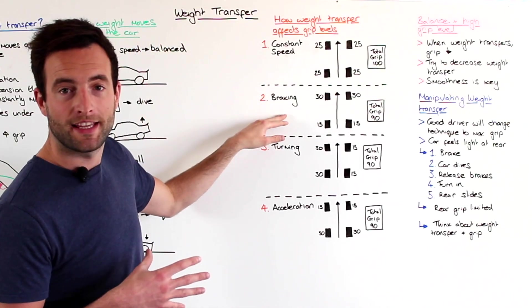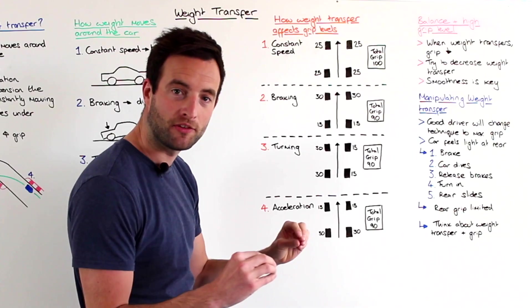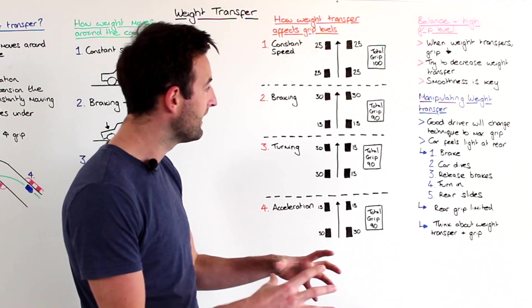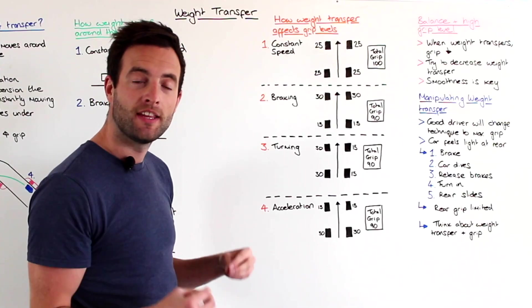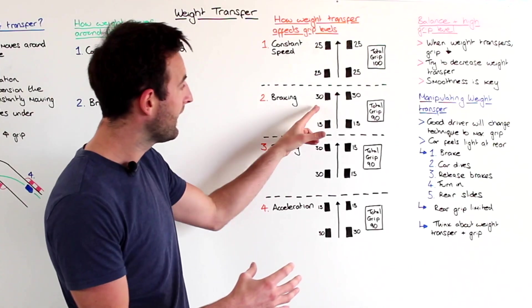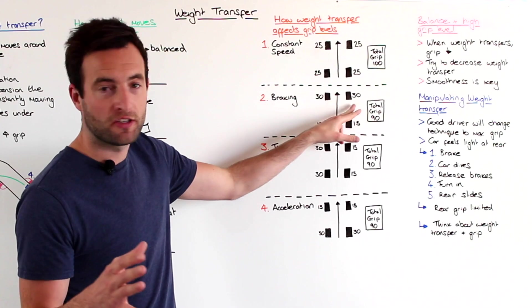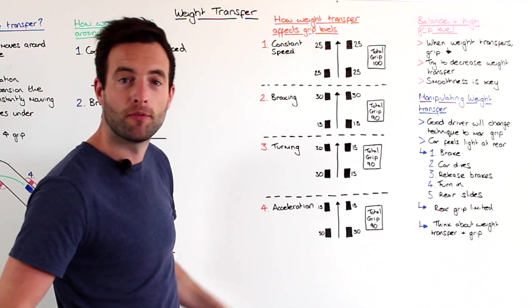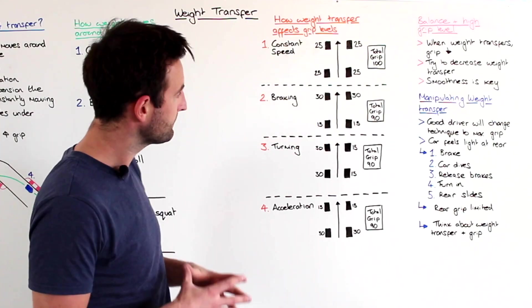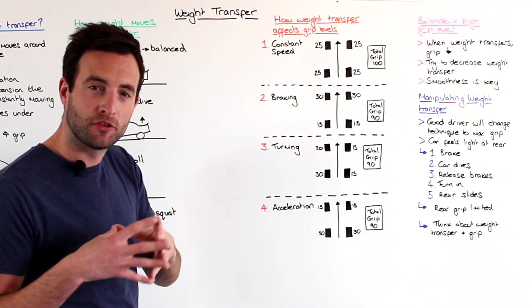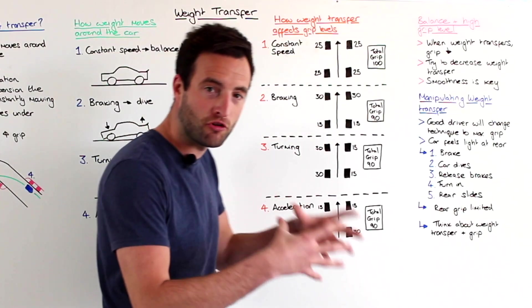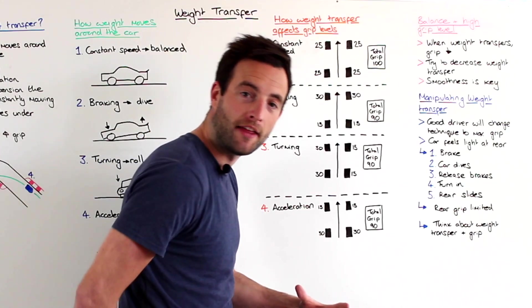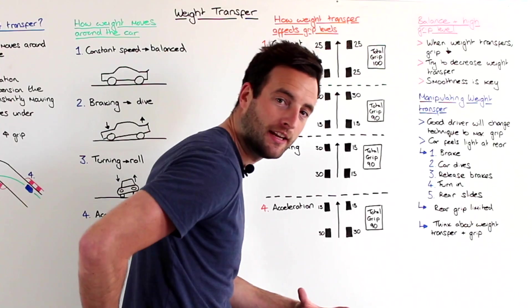Then when we get on the brakes, the front suspension compresses, the weight moves to the front of the car when it's in dive. And because of this, the grip level at the front of the car increases. And for argument's sake, we've said this is 30. And it takes it away from the rear of the car, which is now 15. So it's important to understand that because this grip has moved forwards, the front now has lots of grip when you're on the brakes. And the rear is up in the air and feeling quite light.